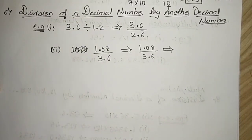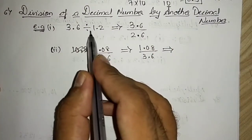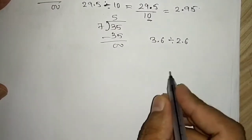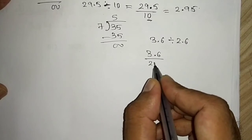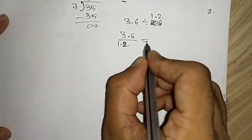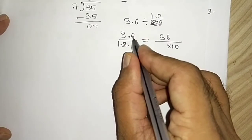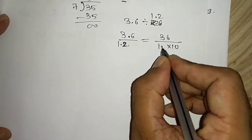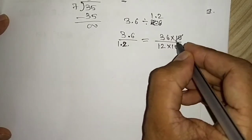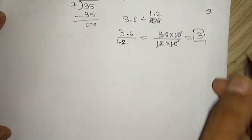Now the final part: division of a decimal number by another decimal number. Take 3.6 ÷ 1.2. Remove one decimal place from 3.6 to get 36, divide by 10; remove one decimal place from 1.2 to get 12, multiply numerator by 10. The 10s cancel out, leaving 36 ÷ 12 = 3.